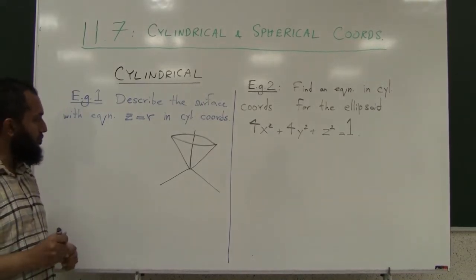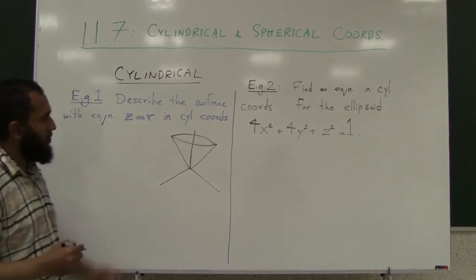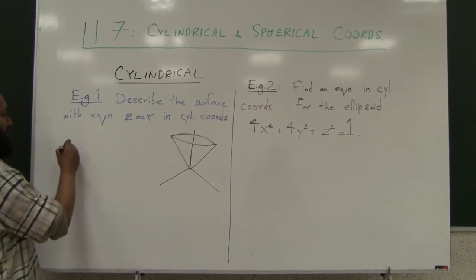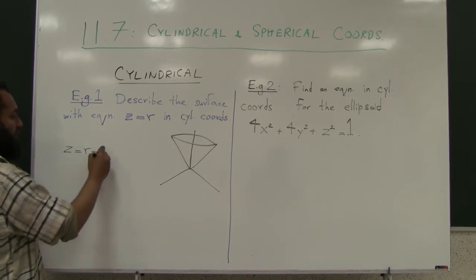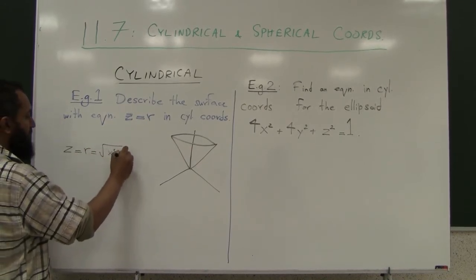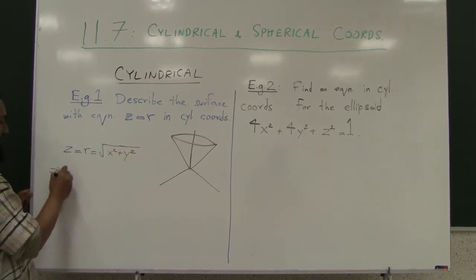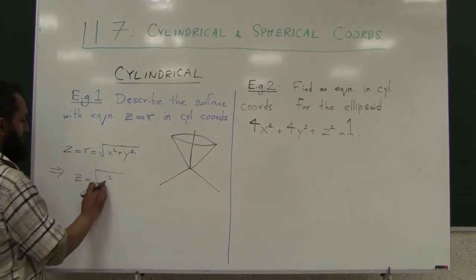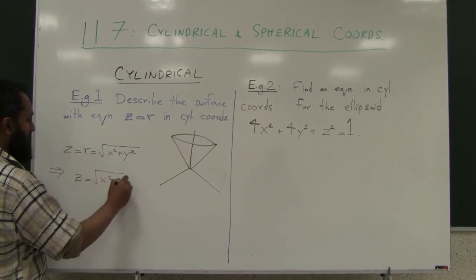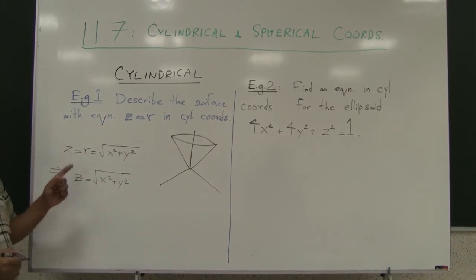Let's convert it into rectangular coordinates. You have z equals r, and r equals the square root of x squared plus y squared. So you get the equation z equals the square root of x squared plus y squared.